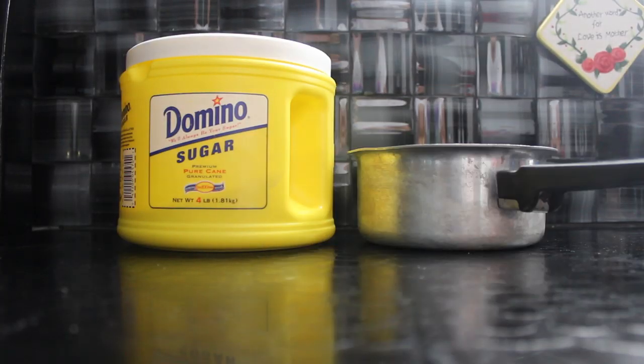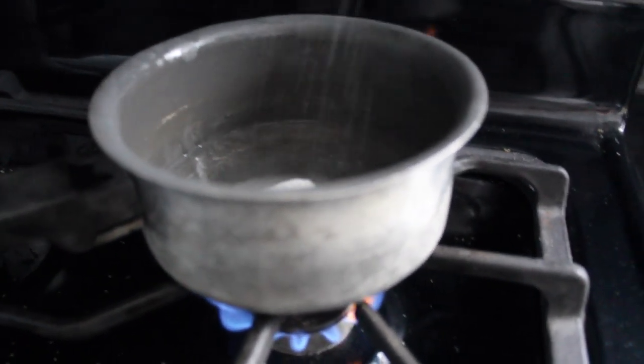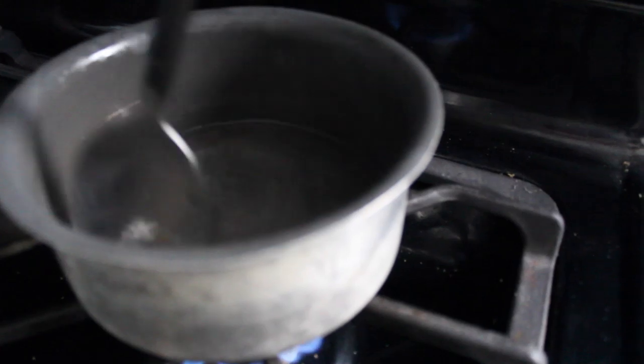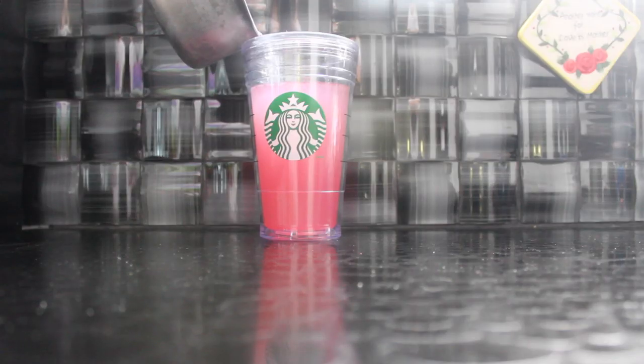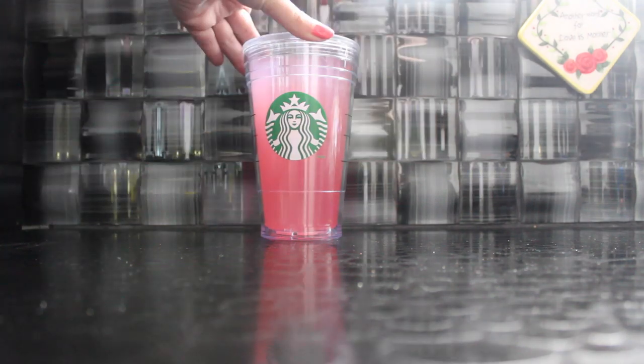Take sugar, a small pot, and pour one third cup of water into the pot. Then pour one third cup of sugar into the pot and stir it until you can't even see the sugar. Pour that into the tumbler or cup and mix.